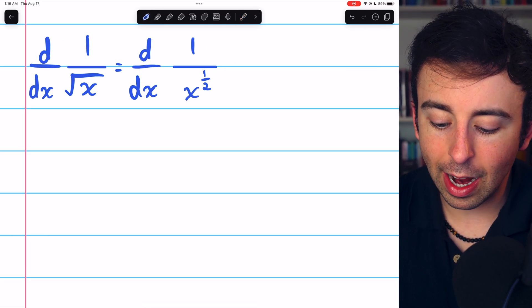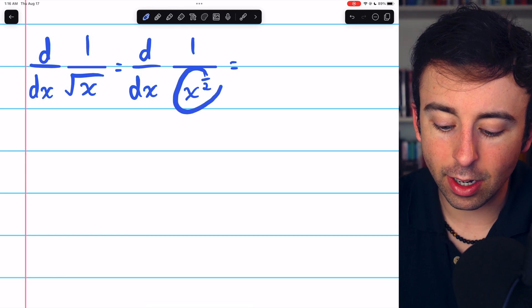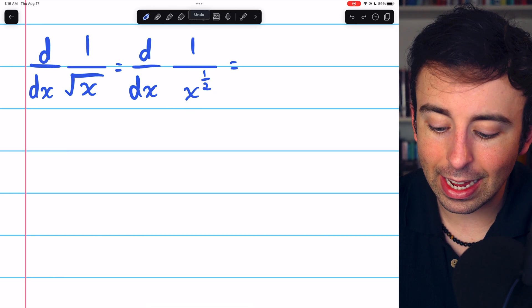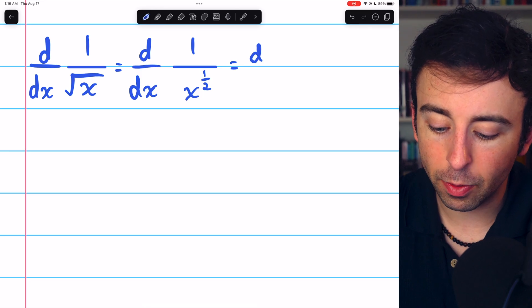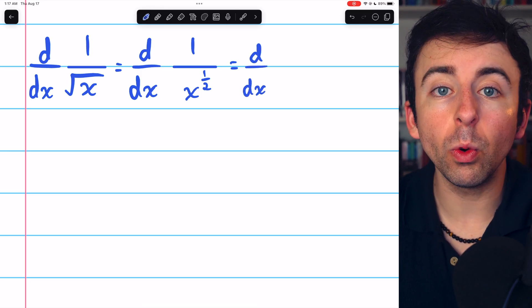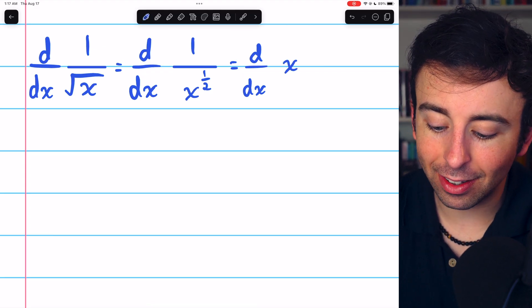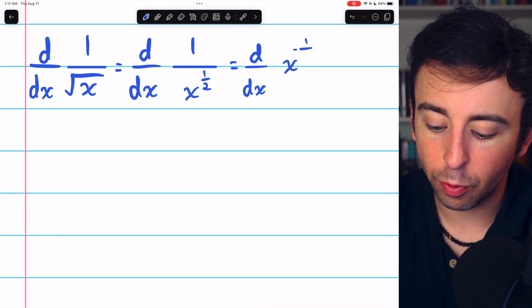Then, we just have to note that x being in the denominator with some power is the same as taking x out of the denominator and negating its power. So, we could write 1 over x to the half as x to the negative half with no fraction now.